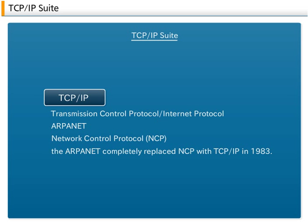The idea of the protocol hierarchy was already established at that time. This provided the foundation for the transition of the ARPANET host protocol from NCP to TCP/IP, and the ARPANET completely replaced NCP with TCP/IP in 1983.